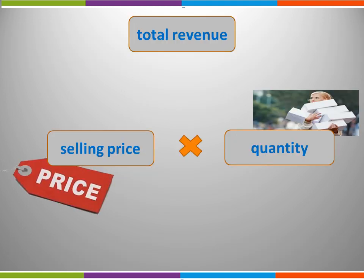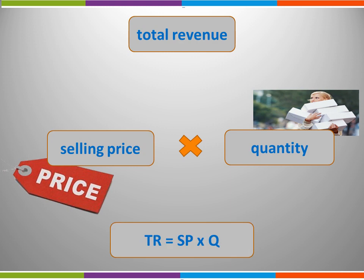How do we calculate total revenue? We take the selling price of an individual unit and multiply it by quantity — the total number of units that the business has sold. The formula therefore is: Total Revenue = SP × Q.